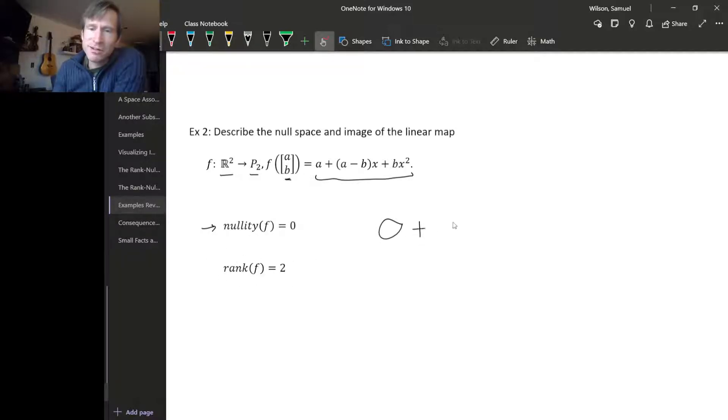Now if we add these together, the nullity and the rank, we get 2, and sure enough, that is the dimension of the domain space, R². So the Rank-Nullity Theorem checks out again. Notice that the dimension of the codomain space has no role to play in the Rank-Nullity Theorem. It just doesn't come into it at all.